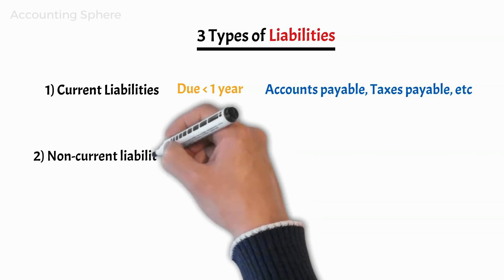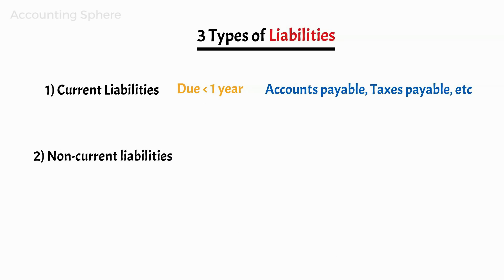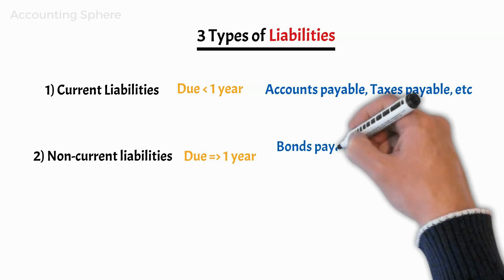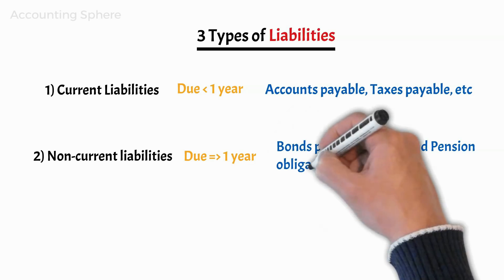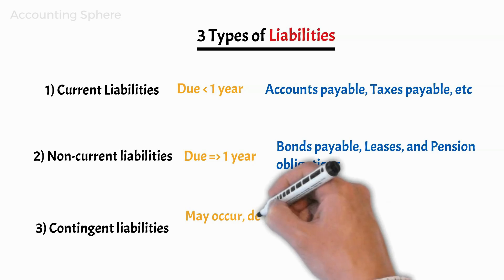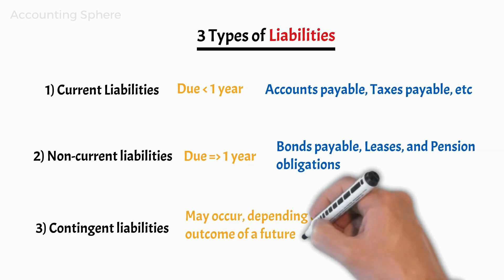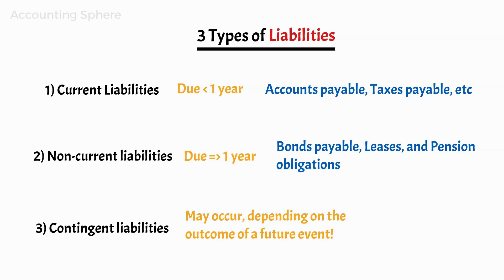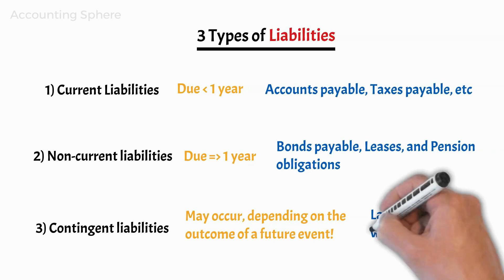Two: non-current liabilities, often referred to as long-term, which are obligations listed on the balance sheet not due for more than a year, for example bonds payable, leases, and pension obligations. Three: contingent liabilities, which are liabilities that may occur depending on the outcome of a future event. Therefore, contingent liabilities are potential liabilities, for example lawsuits and product warranties.